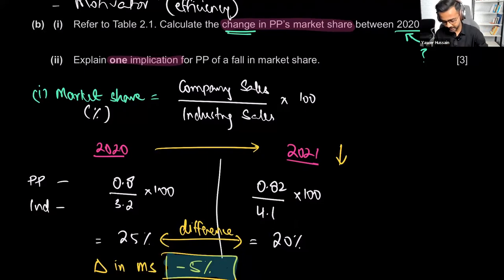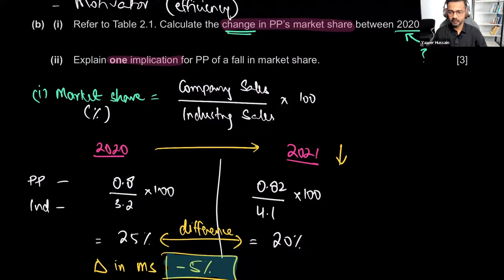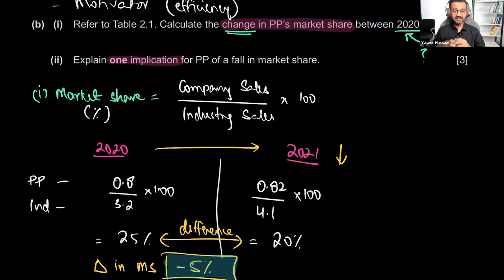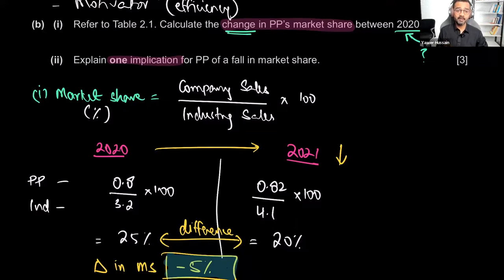Part two is related to that: explain one implication for PP of a fall in market share. Implication means how is this going to impact them and how will they respond? The word implication comes from imply — having a meaning on something else. When this happens, how does it impact the entire company, and how should PP respond? That's what you would have to explain.